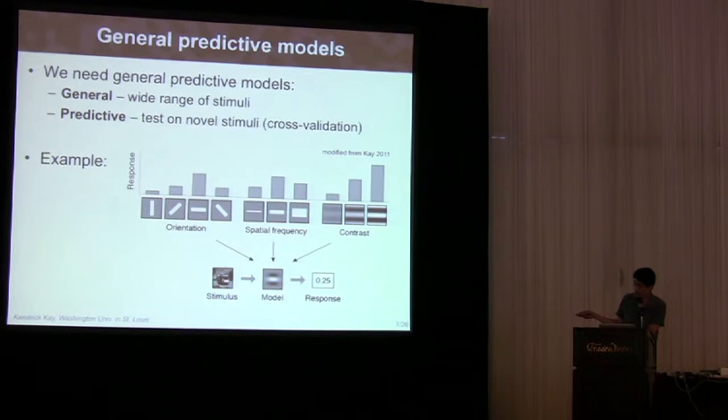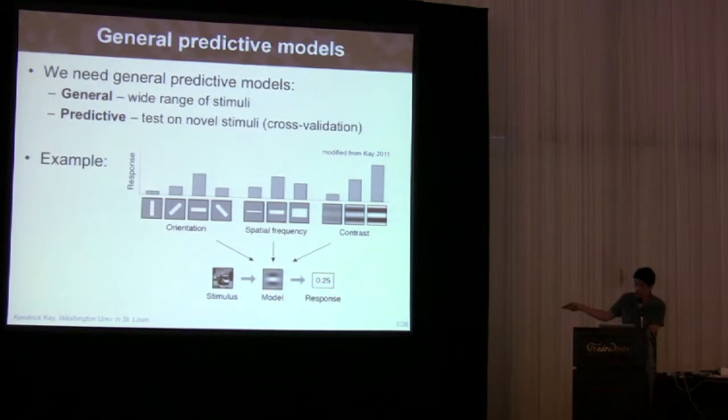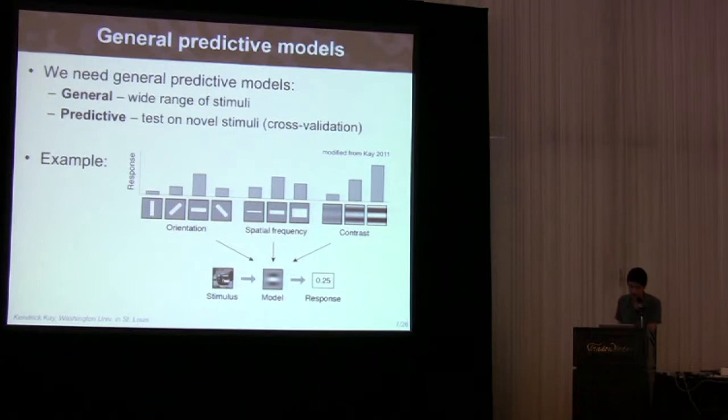Now, of course, this is a simple example. We don't have to hold ourselves to a linear model as shown here. We can use any computation at all that you like. And also on the response side, we don't only have to talk about the spiking rate of a neuron, but we can use other measures of neural activity that we have access to.